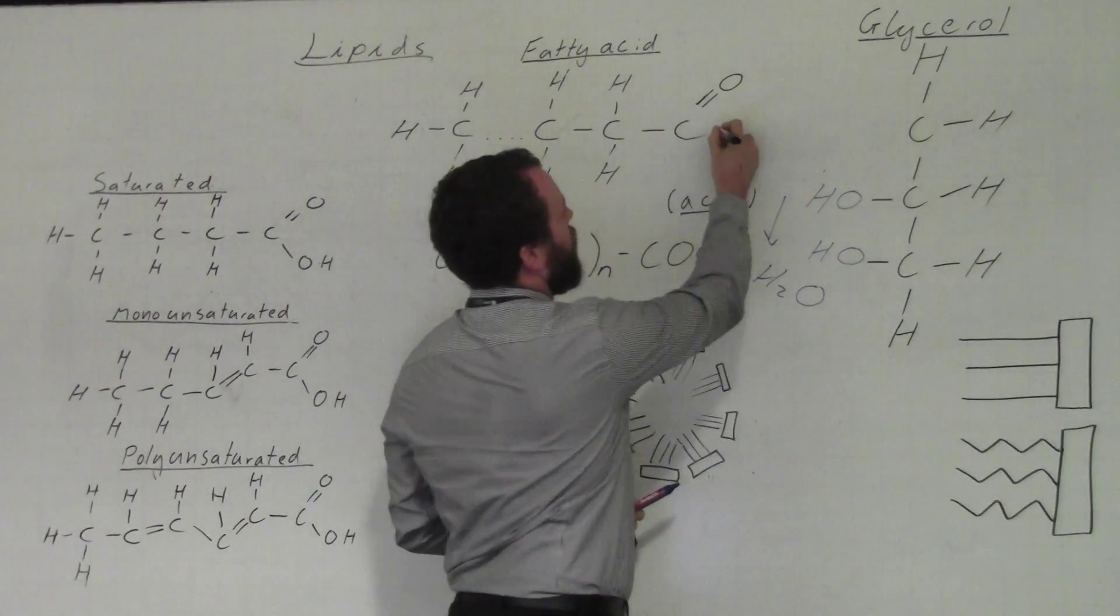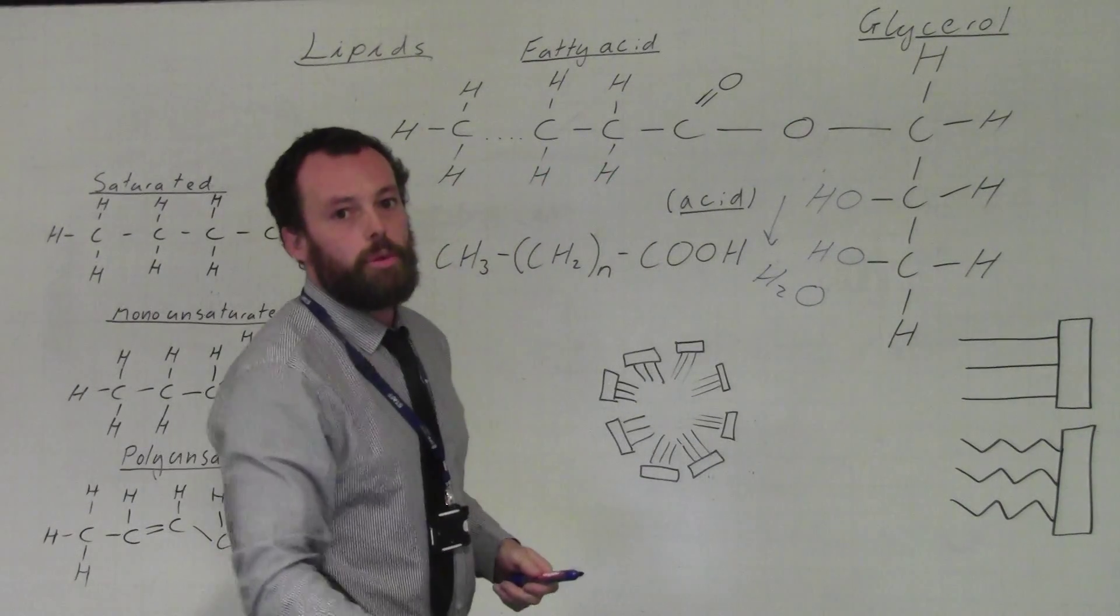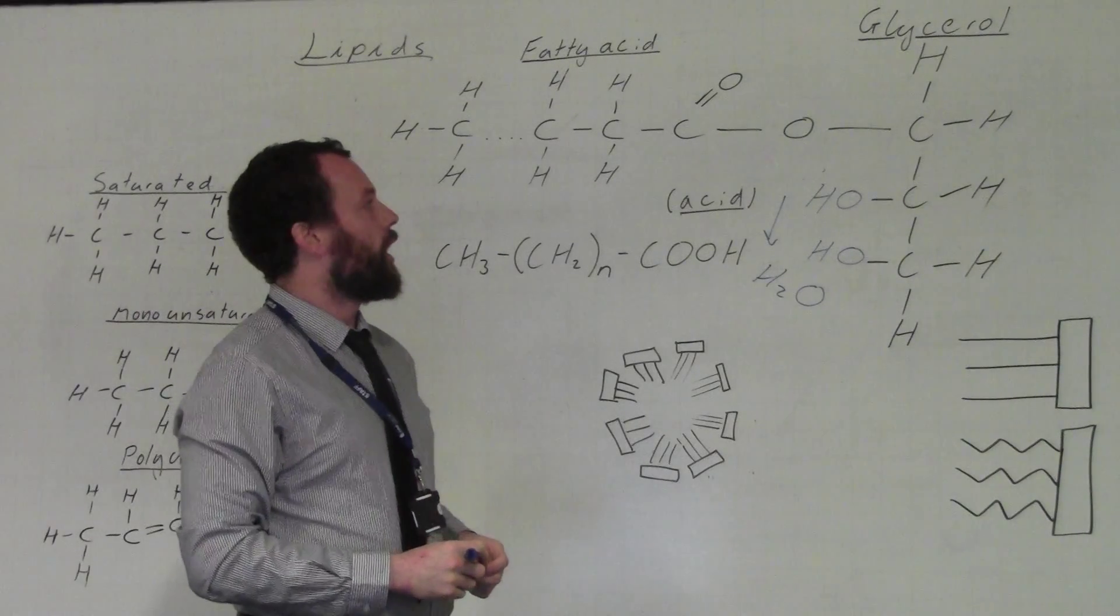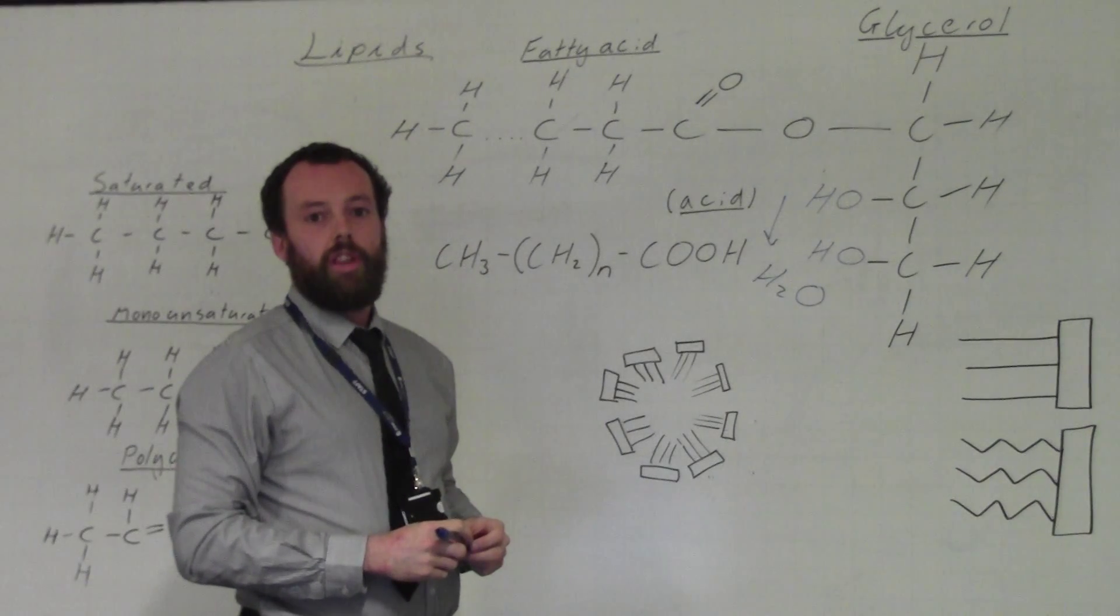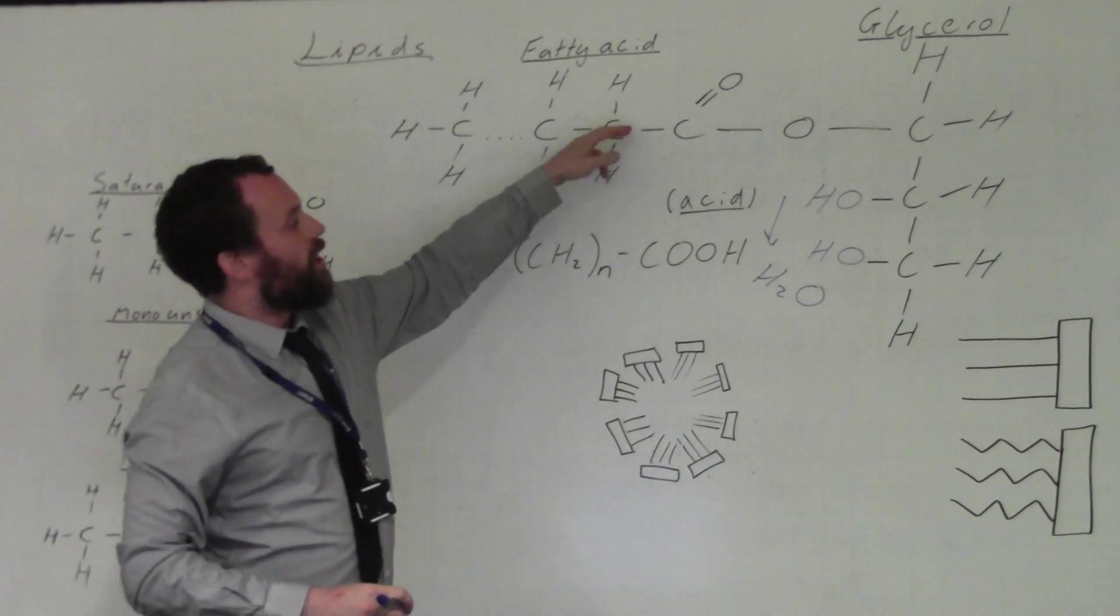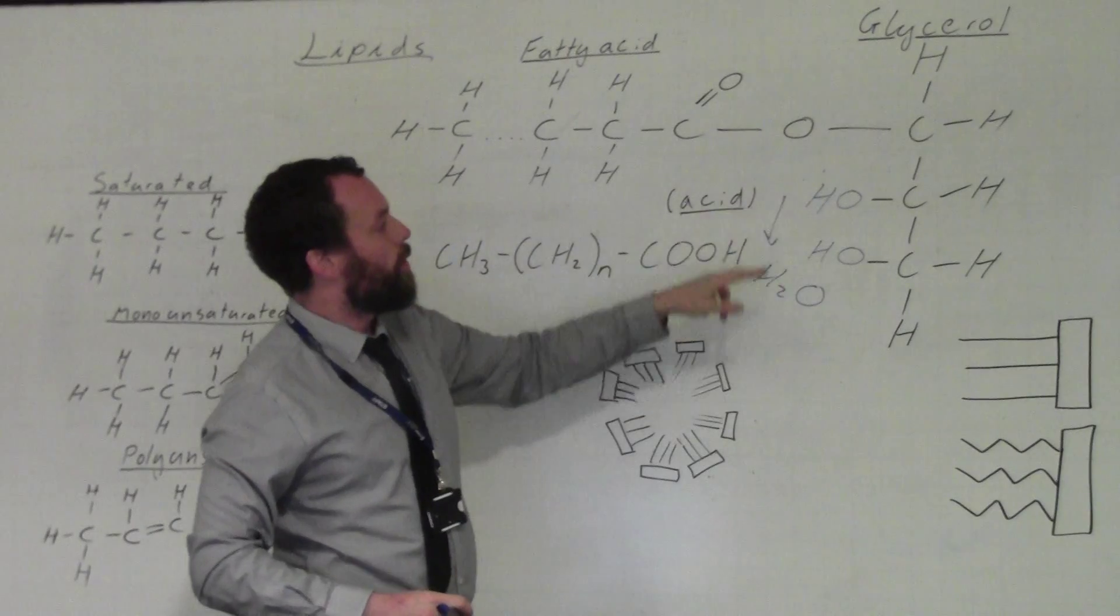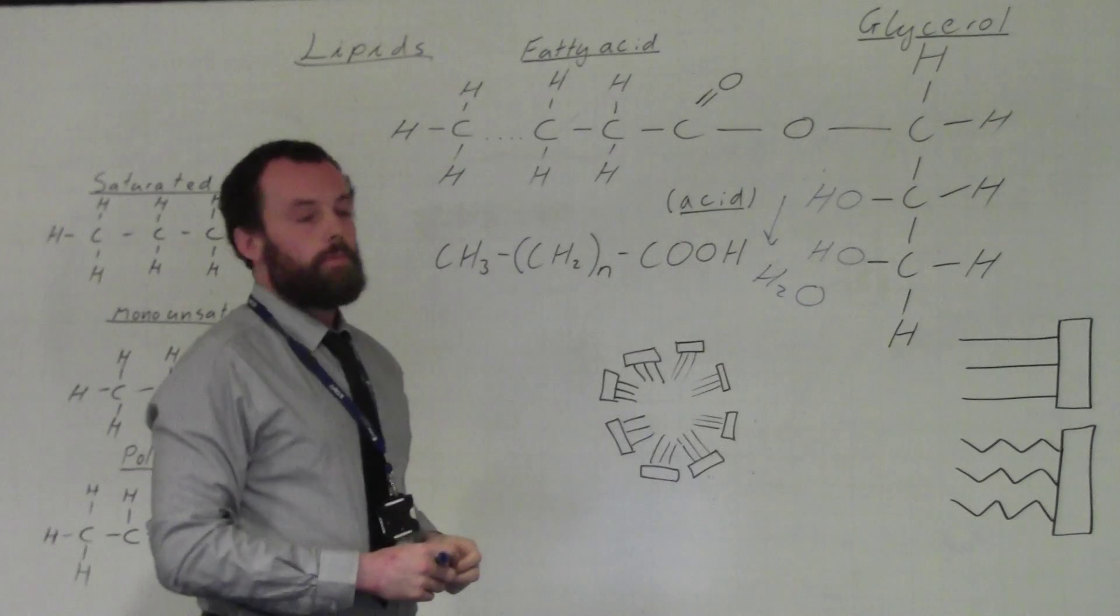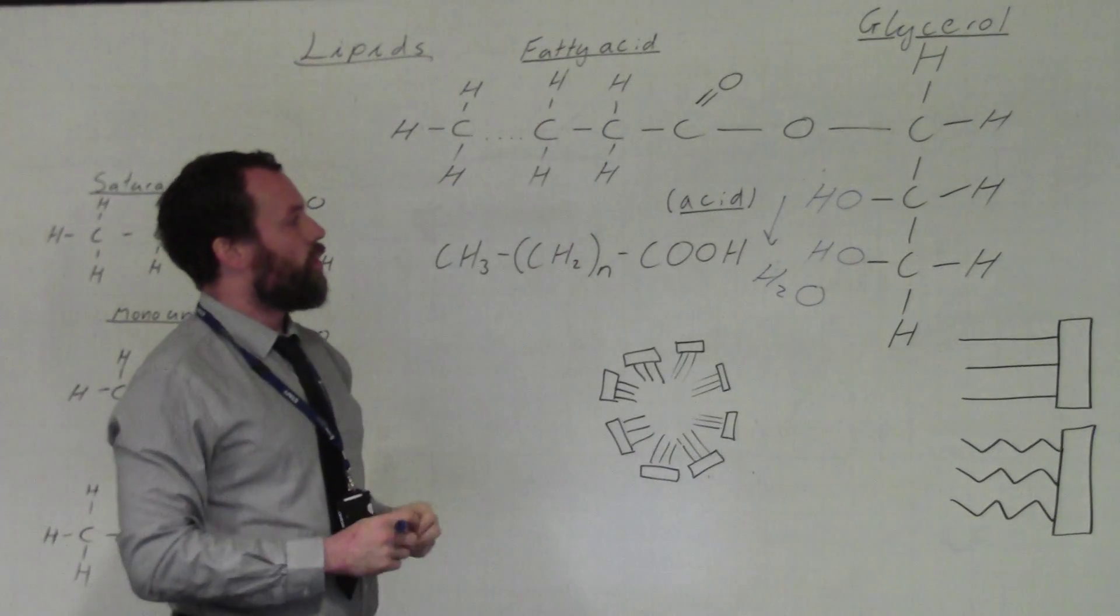We see a bond form with oxygen in the middle, exactly as when we join monosaccharides together to form disaccharides. The only difference is that this bond is referred to as an ester bond rather than a glycosidic bond. This happens three times—one fatty acid on that OH group, one on there, and one on there—to form a triglyceride, because we have glycerol and these three fatty acids joining on.